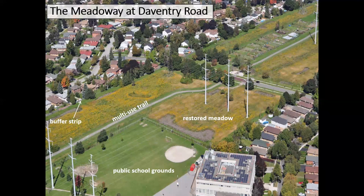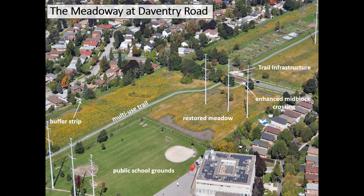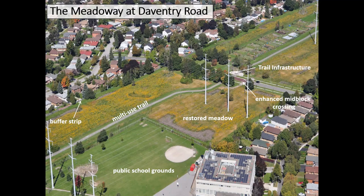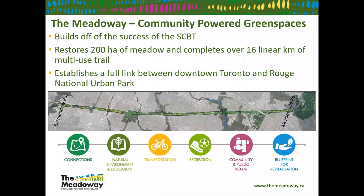Because the multi-use trail is a big component, we implement additional features for pedestrian safety. The Meadoway crosses 32 different roads, ranging from quiet suburban streets to four or five lane major arterial roads. In this case we have an enhanced mid-block crossing and associated trail infrastructure. Another important piece is the allotment garden — many individuals have voiced interest in urban agriculture opportunities, and allotment gardens are one example of features we actually have in the Meadoway today.